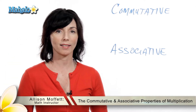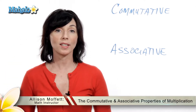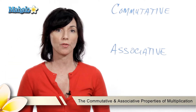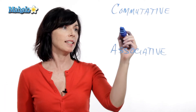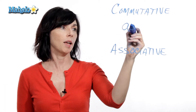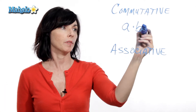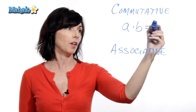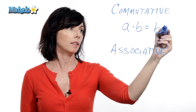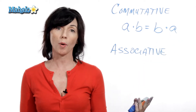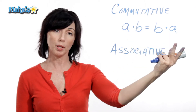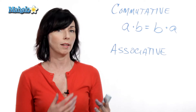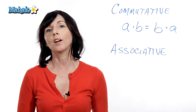Hey, it's Alison from mahalo.com. I want to talk to you about the commutative and associative properties for multiplication. So let's say we have A times B. The commutative property for multiplication says I'll get the same answer if I do B times A. So the property says that these numbers commute — I can change the order in which I multiply them and I'll still get the same answer.